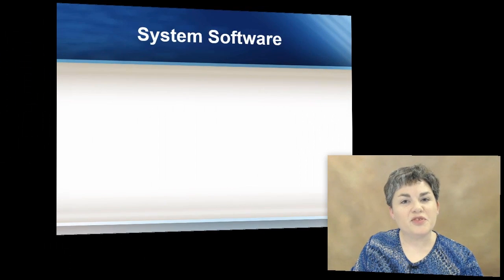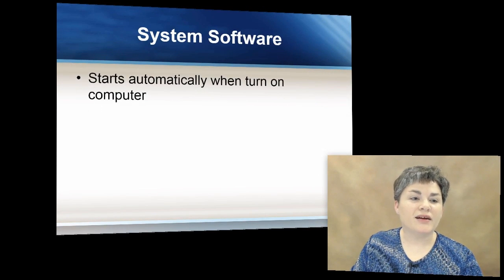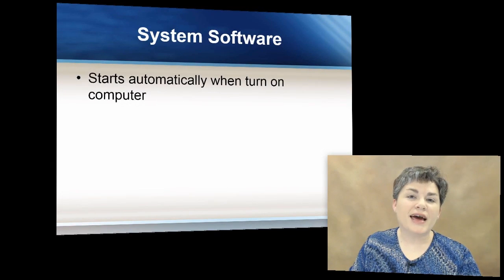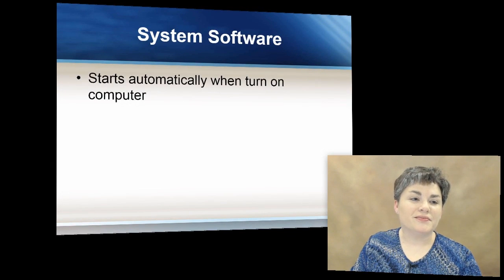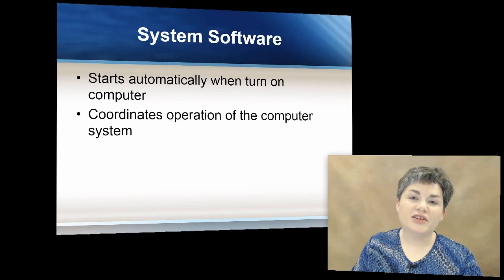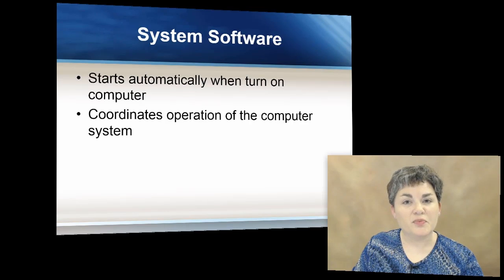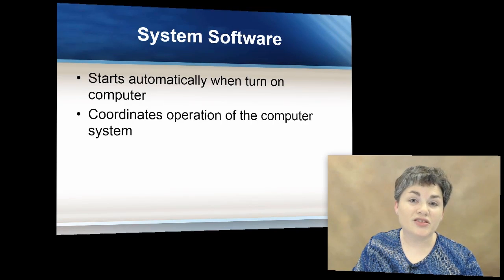So what's the difference between the two types? Well, system software starts automatically when you turn the computer on and it coordinates the operation of the computer system. Basically, it coordinates the operations between the computer and the user, and also between the computer and the application software that's installed on that computer.